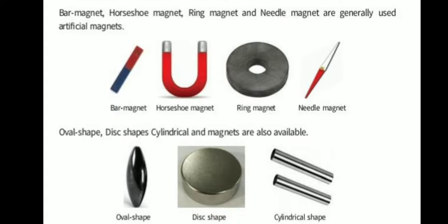Magnets come in different shapes. Bar magnet, horseshoe magnet, ring magnet, and needle magnet are generally used artificial magnets. Oval shape, disc shape, and cylindrical magnets are also available currently.